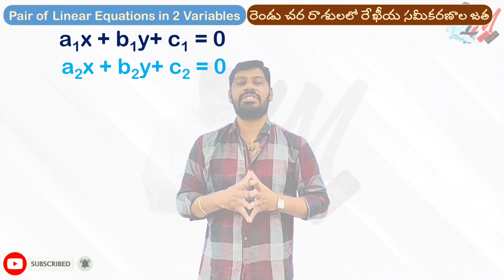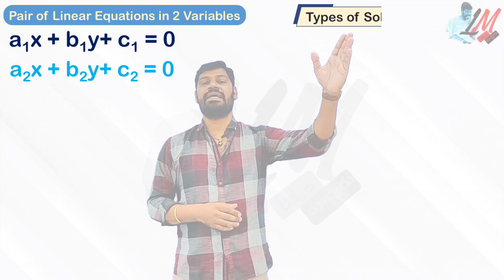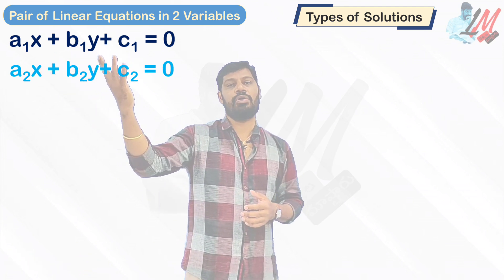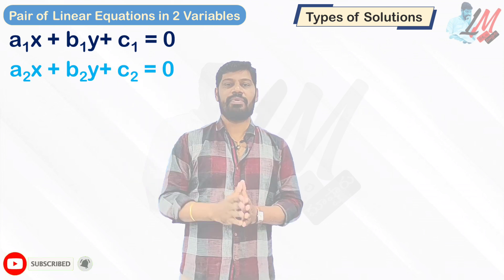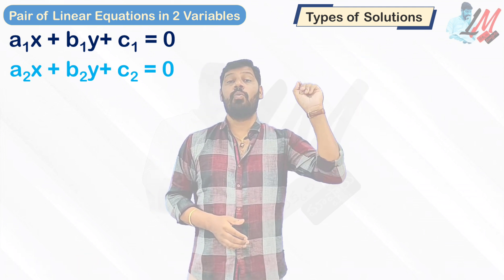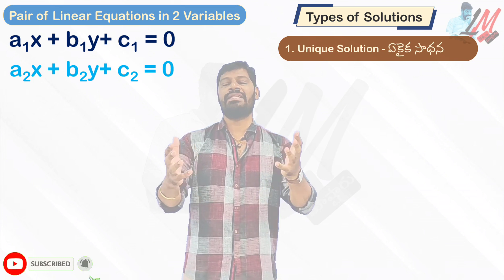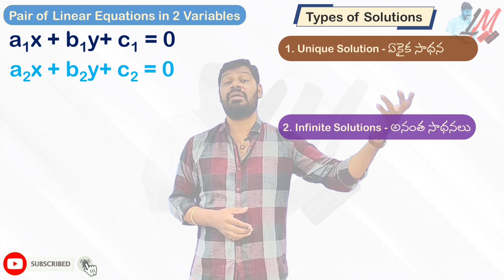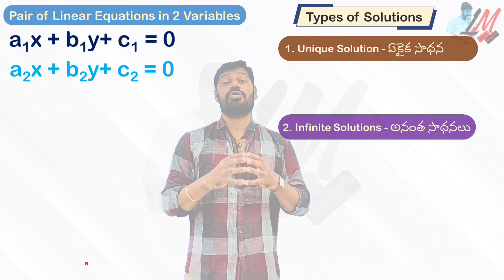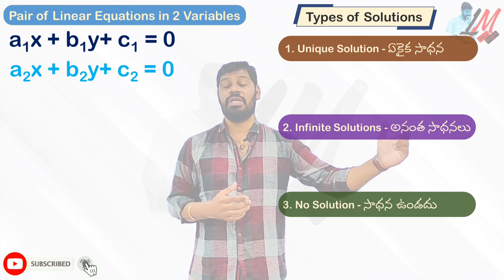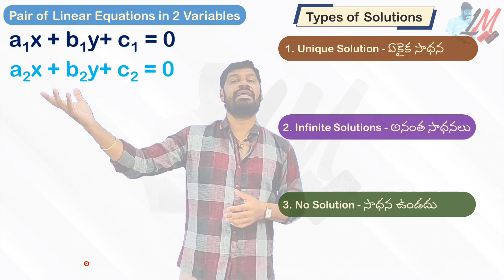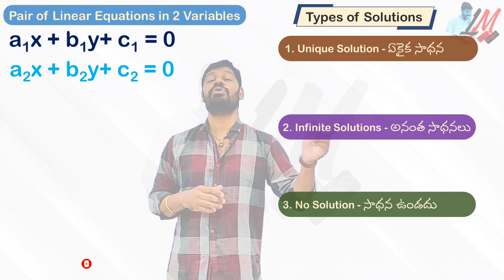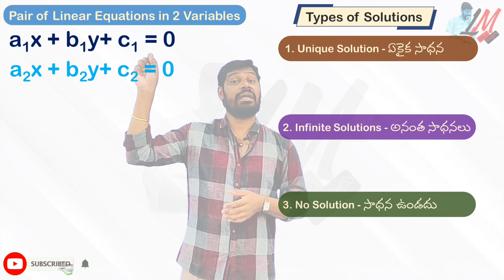We will discuss the types of solutions. In the general form, a1x plus b1y plus c1 equal to 0 and a2x plus b2y plus c2 equal to 0, when we observe the solutions there are three cases: number one, a unique solution; number two, infinite solutions; number three, no solution.